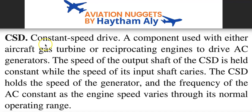The electrical generation component on the engine is called IDG because the Integrated Drive Generator is composed of two parts: a Constant Speed Drive plus a Generator. This is because the rotating shaft of the main aircraft engine always varies in speed, but the generator needs a constant input to have a constant electrical power output. So we must have a component that will convert the variable speed of the engine into a fixed speed for the generator.